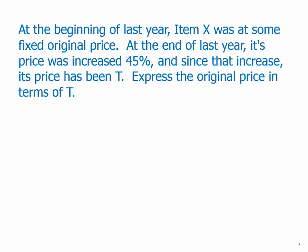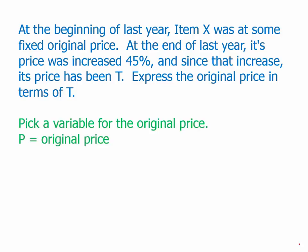Here's another practice problem. At the beginning of last year, item X was at some fixed original price. At the end of last year, its price was increased by 45 percent, and since that increase its price has been t. We want to express the original in terms of t. Let p be the starting price. The multiplier: change 45 percent to a decimal — 0.45 — and add 1, giving 1.45. So p times 1.45 equals t. Solving for p: p equals t divided by 1.45. That expresses the original price in terms of t.